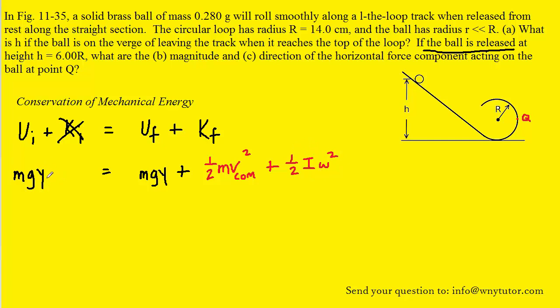Notice as well that the initial height of the ball is simply going to be h, so we can replace this value with h. Notice also that when the ball reaches the top of the track, its height is going to be two radii. You have the radius from the top of the track to the center of the circle and then another radius to the ground level, so the overall height there would be 2R. So that means we can replace this term right here with 2R.